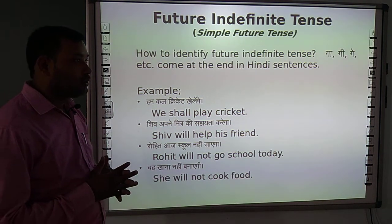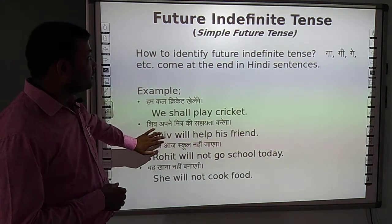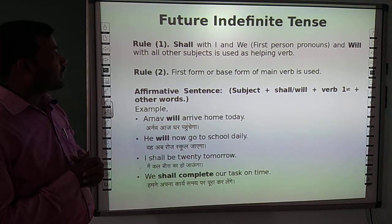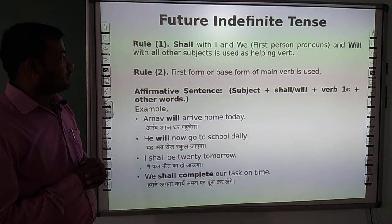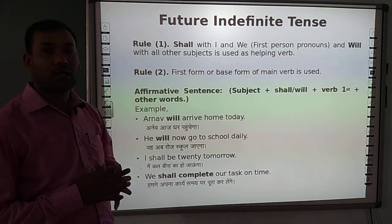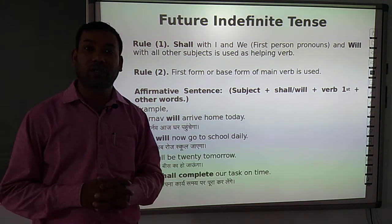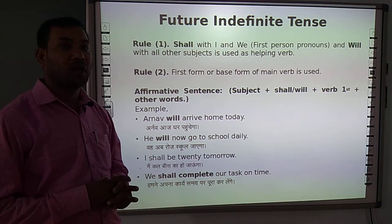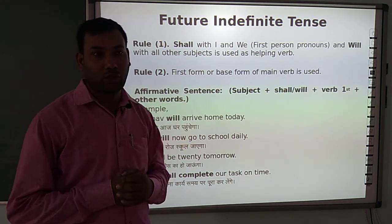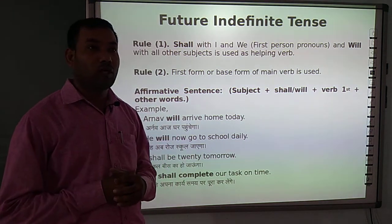Now we shall discuss its forms and uses. The first rule is: we use 'shall' with first person pronouns — I and We. We use 'will' with all other subjects. When we use 'shall' or 'will', we use the base form (first form) of the main verb.